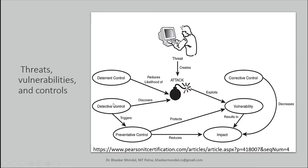On the other hand, if we don't want the attack itself — if I show only this path, there will be vulnerability exploitation, which leads to some impact, and we can have corrective control to decrease that impact. But this way you are allowing attackers to attack and only trying to reduce the impact. We can do another thing: we can have deterrent control, which reduces the likelihood of attacks — the chances of attack to your network.